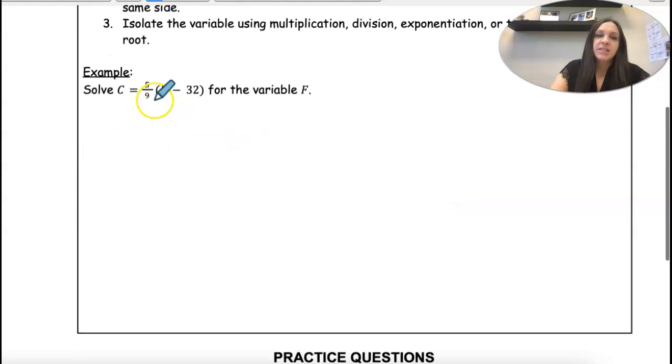So here's an example. This is the Celsius when we have Fahrenheit. This is how we convert. So I want to isolate the variable F. So my answer is going to be F equals something here with the variable C.